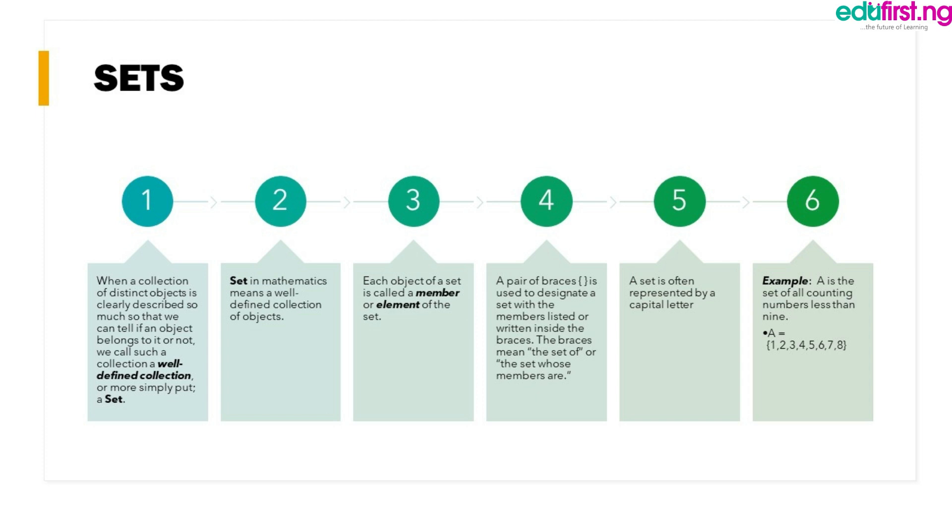For example, A is a set of all counting numbers less than 9. To write this, we put A equals open braces 1, 2, 3, 4, 5, 6, 7, 8, close braces.